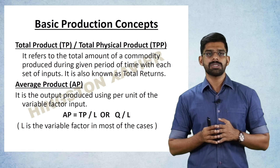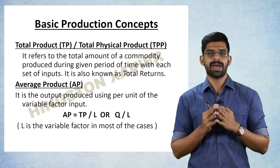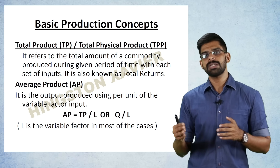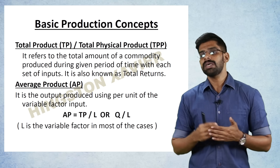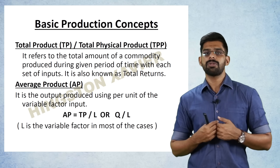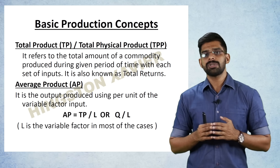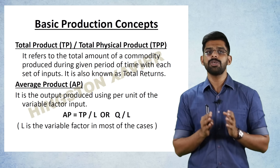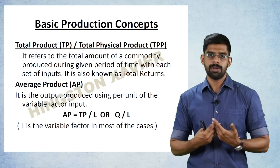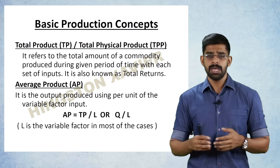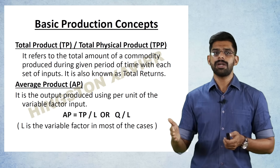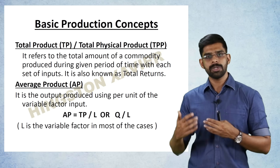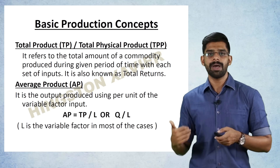The second concept is Average Product (AP). It is the output produced per unit of variable factor used. In most cases, the variable factor we consider is labour, since labour is easily available and can be increased. Average Product tells us how much output is produced per unit of labour. The formula is: Average Product (AP) = Total Product divided by Variable Factor, that is Q divided by L.